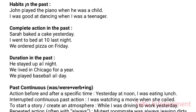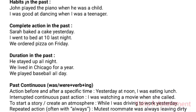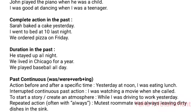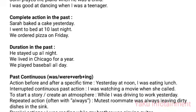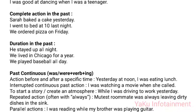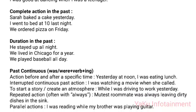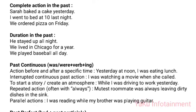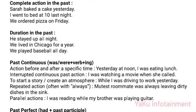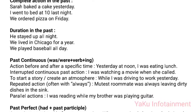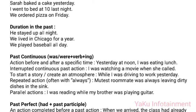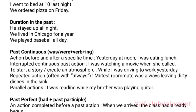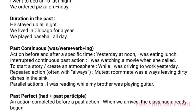Past Continuous (was/were + verb-ing). Uses: (1) Action before and after a specific time: 'Yesterday at noon, I was eating lunch.' (2) Interrupted continuous past action: 'I was watching a movie when she called.' (3) To start a story or create an atmosphere: 'While I was driving to work yesterday.' (4) Repeated action (often with 'always'): 'She was always leaving dirty dishes in the sink.' (5) Parallel actions: 'I was reading while my brother was playing guitar.'